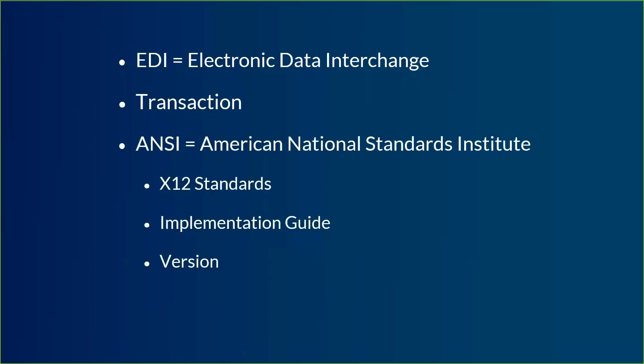Something else that's going to come up is version. There are two different ways the term version can be used. The most generic form is the version of the standard, and right now the entire industry is pretty much on version 5010. However, there's also a version code that goes inside every type of transaction to identify the version it's running off of. This is an example of what it looks like — the pink part is the generic version, so this one is a 5010 version. Presumably the next version will be 7030, and 7030 version codes would start 007030.